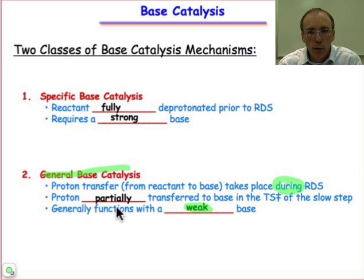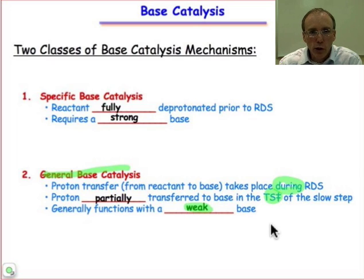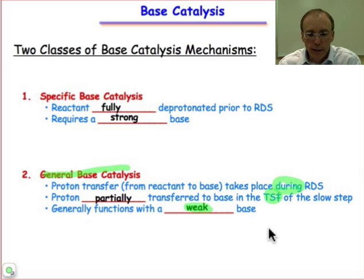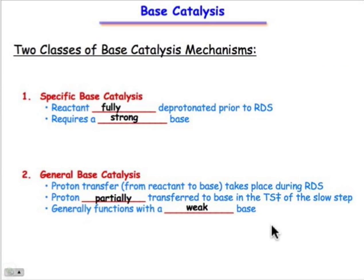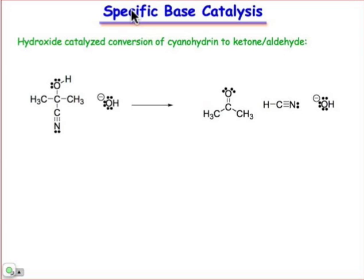This partial transfer of a proton is going to show up in how we draw the transition state structure. Our curved arrows will reveal this partial deprotonation. What we're often going to see in general base-catalyzed mechanisms is partial deprotonation simultaneously activating the nucleophile toward its electrophile partner. We'll see an example of that in just a minute, but first, for comparison, let's look at an example of a specific base-catalyzed mechanism.